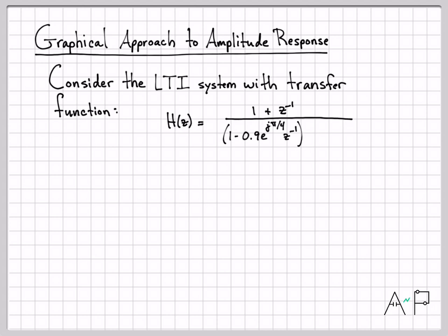On the denominator, I have the product of two terms. One term is essentially a pole at angle 45 degrees, and the other one is a pole at angle minus 45 degrees. And they are close to the unit circle, but not on the unit circle. These poles have a magnitude of 0.9.